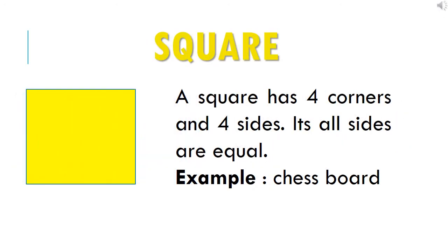Now, the next shape is square. A square has 4 corners and 4 sides. Its all sides are equal. And where can you find such shape? In a chessboard. So, the example of square is chessboard.